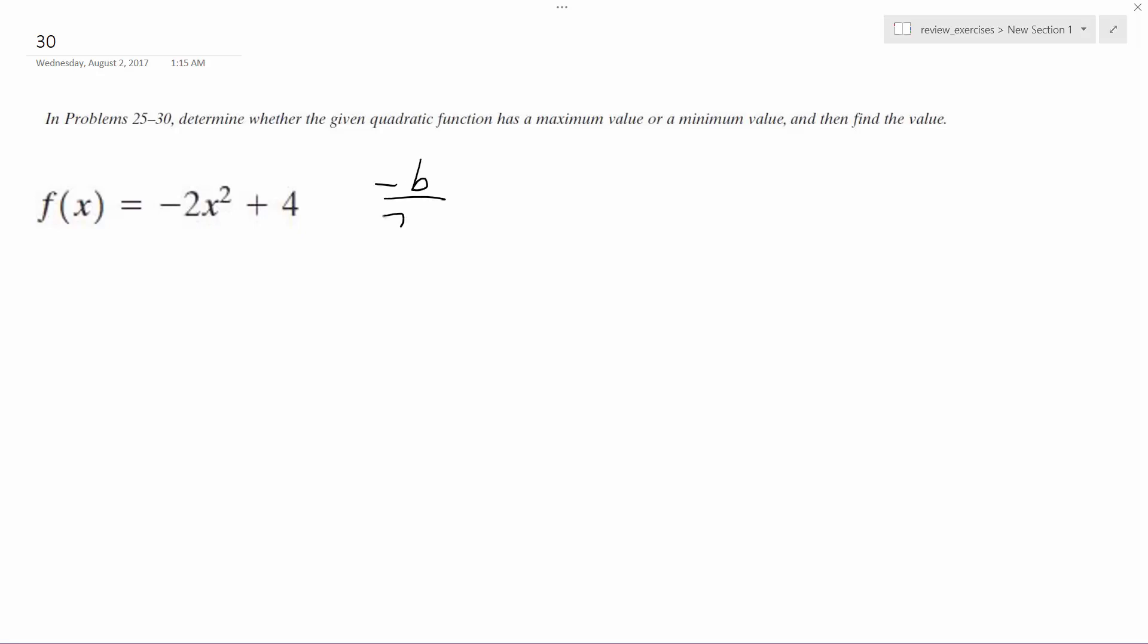So negative b over 2a. So we do, there's no b in this formula because there's no single x value with a coefficient, x raised to the one with a coefficient. It's just an x squared term, so it's actually going to be